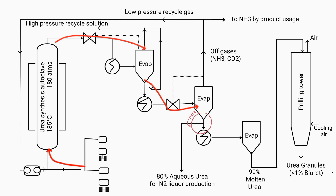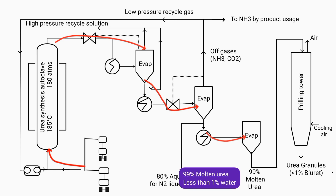The concentration of urea in the solution obtained from this evaporator is higher than before — that is, 80% aqueous urea is obtained from here, which can be used as a liquid fertilizer. For granular urea, this aqueous urea is sent to a vacuum evaporator. The process of evaporation is achieved by reducing the pressure. The solution obtained from this process contains 99% molten urea and less than 1% water, which is sent to the prilling tower. Molten urea contains water so that it can flow in the pipeline.